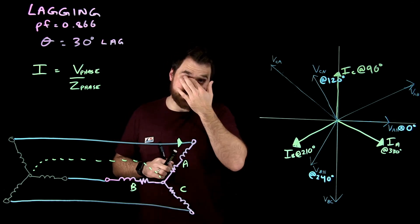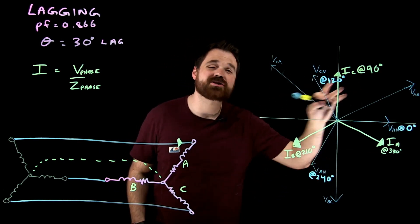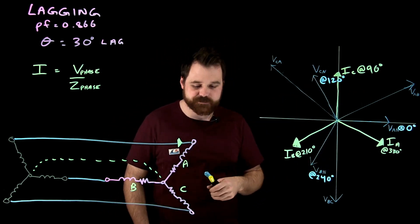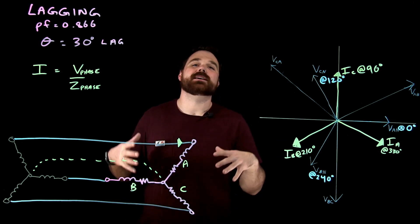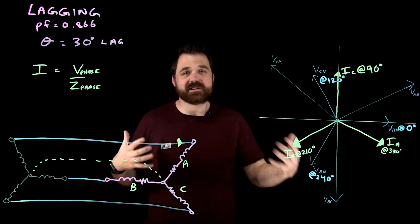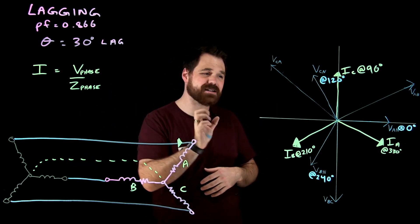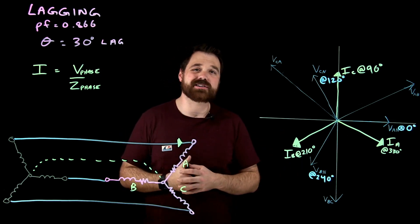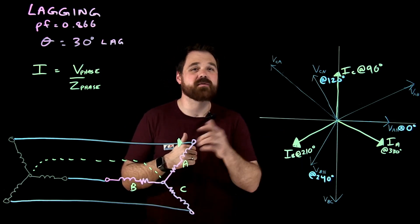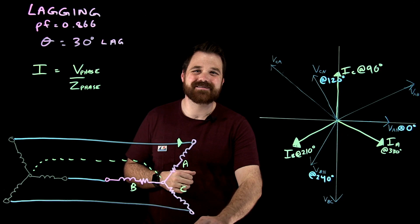So that's what we'd see for phase relationships between phase voltage and phase current, along with our line voltages on the phasor diagram. Thank you so much for watching this video. We covered all the different portions — a resistive, capacitive, and inductive load. I really appreciate you sticking around. Have a great day, and please don't forget to subscribe and hit that like button.